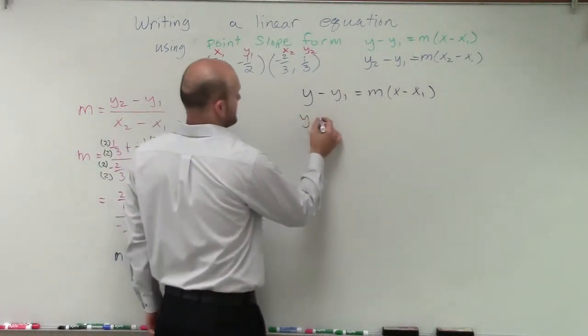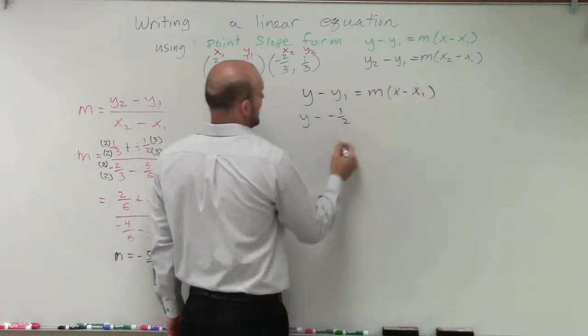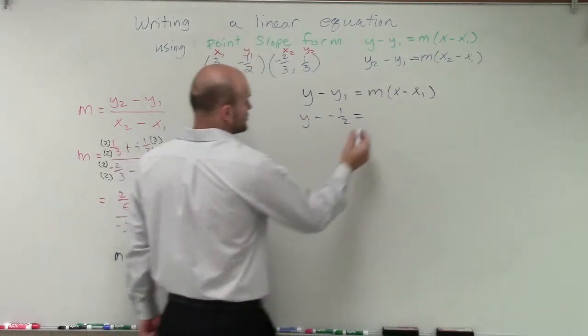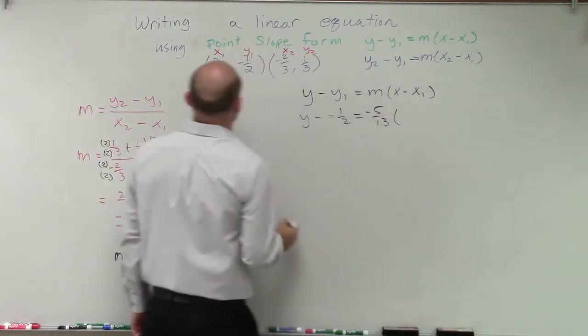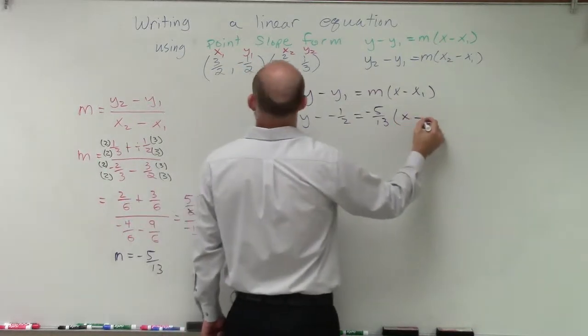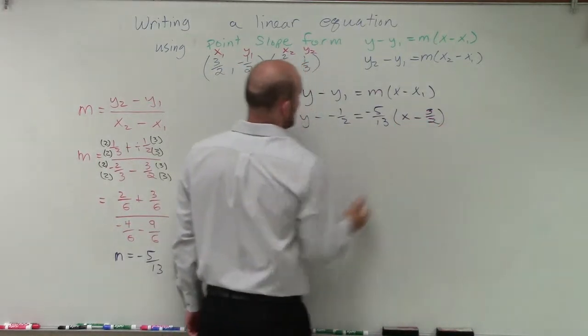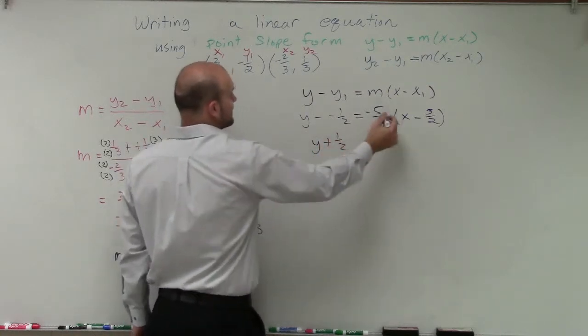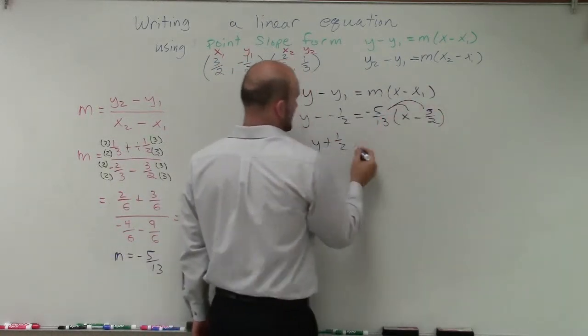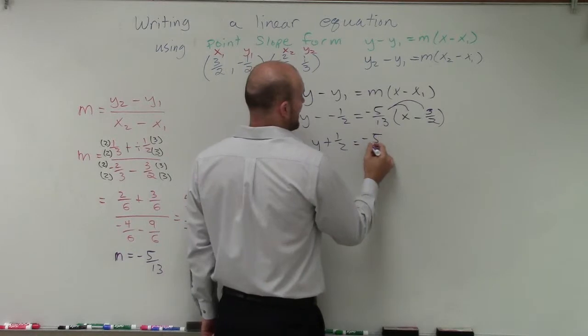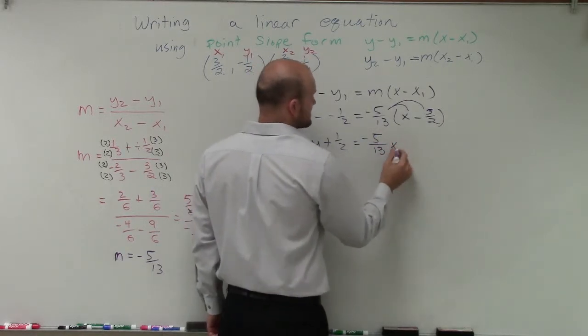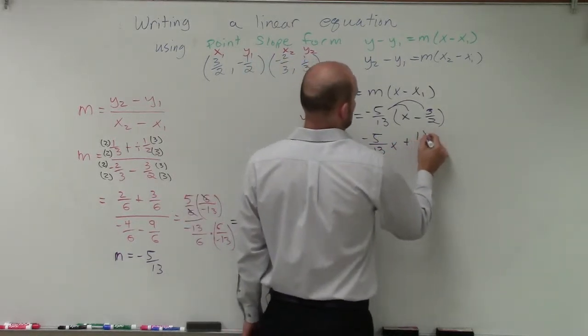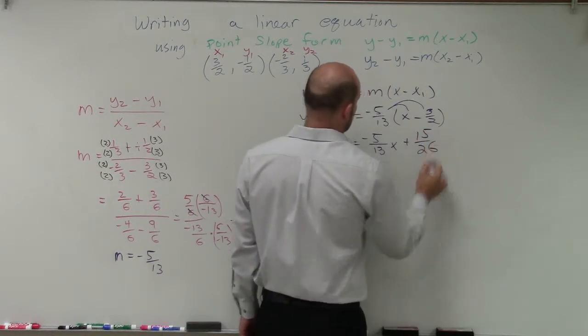So we have y minus negative 1/2 equals my slope, which is negative 5 over 13, times x minus 3/2. Alright. Well, this becomes a double negative again. So this is y plus 1/2. We can apply distributive property here. So therefore I have negative 5/13 x plus 15 over 26.